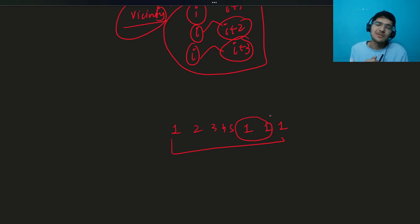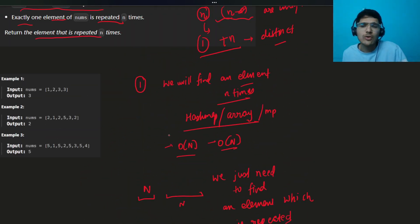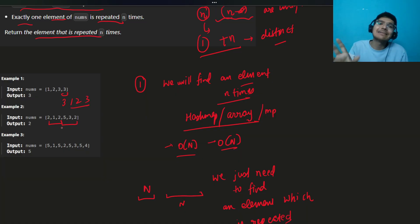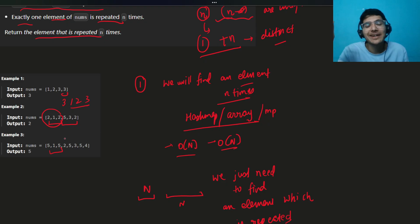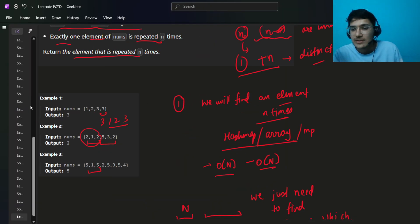You can see it here: the duplicate elements are close together. Sometimes the distance is two, sometimes three. You can observe that in all arrangements they remain within distance three. Once you find the matching element within that vicinity, the job is done. That's all — just check within three positions.